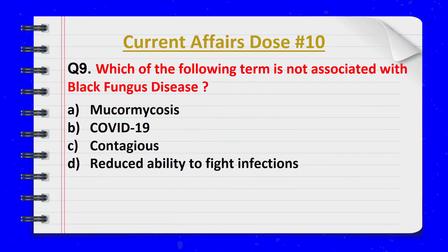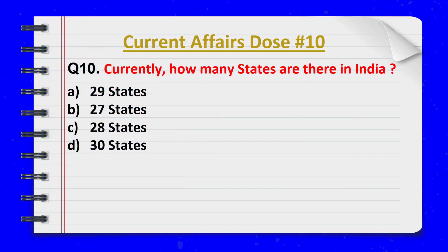Question 9. Which of the following terms is not associated with Black Fungus disease? Correct answer: option number A — Mucormycosis.